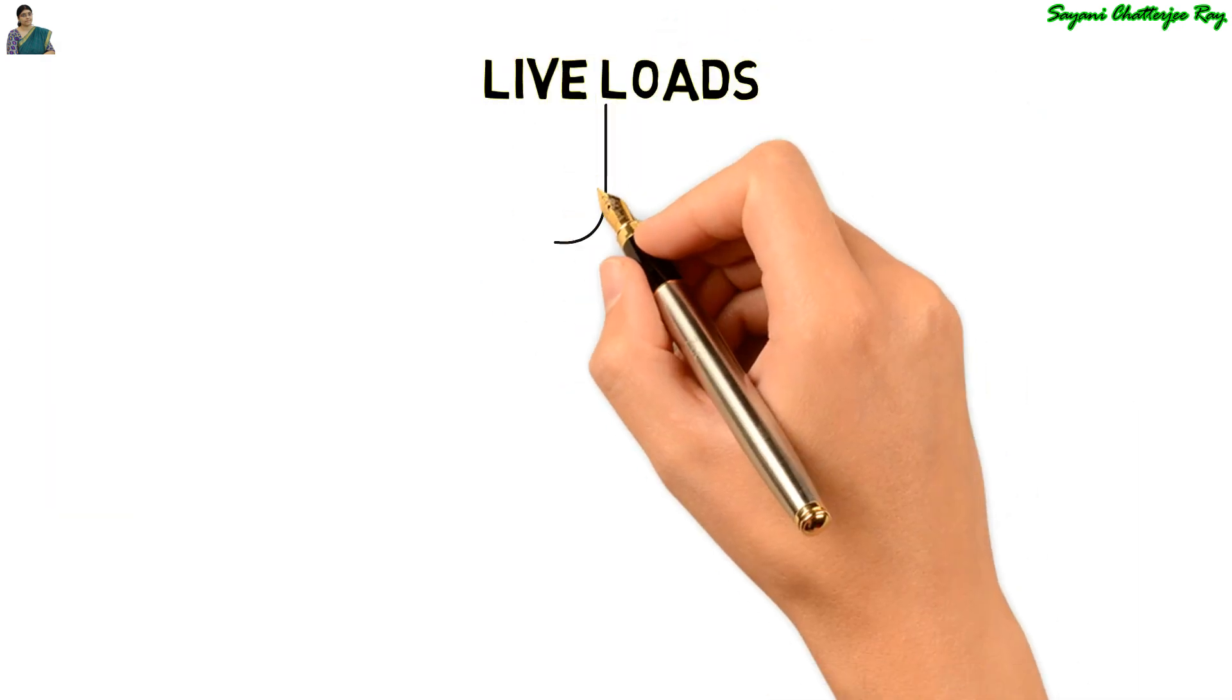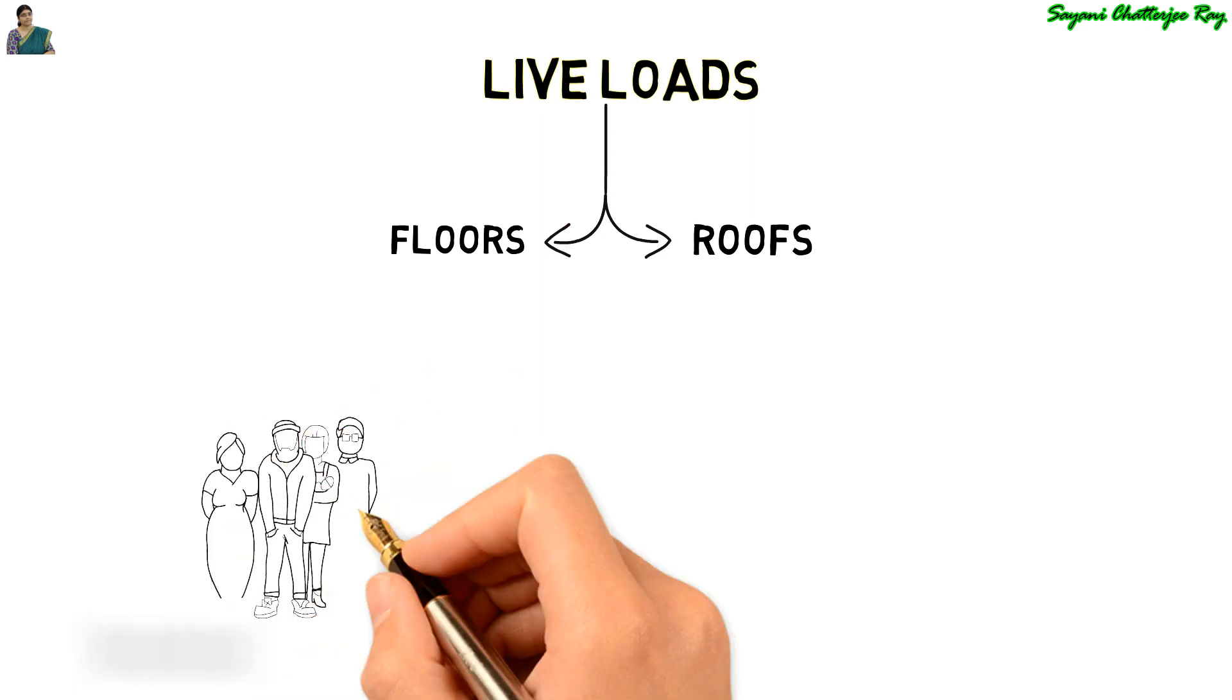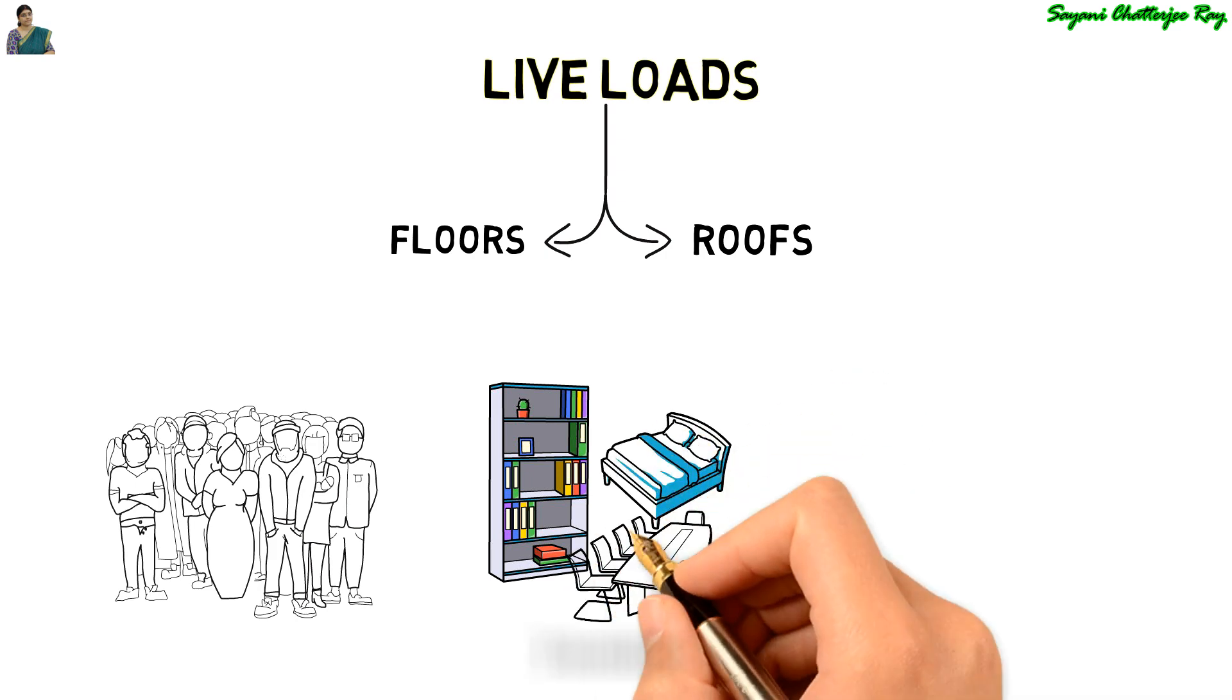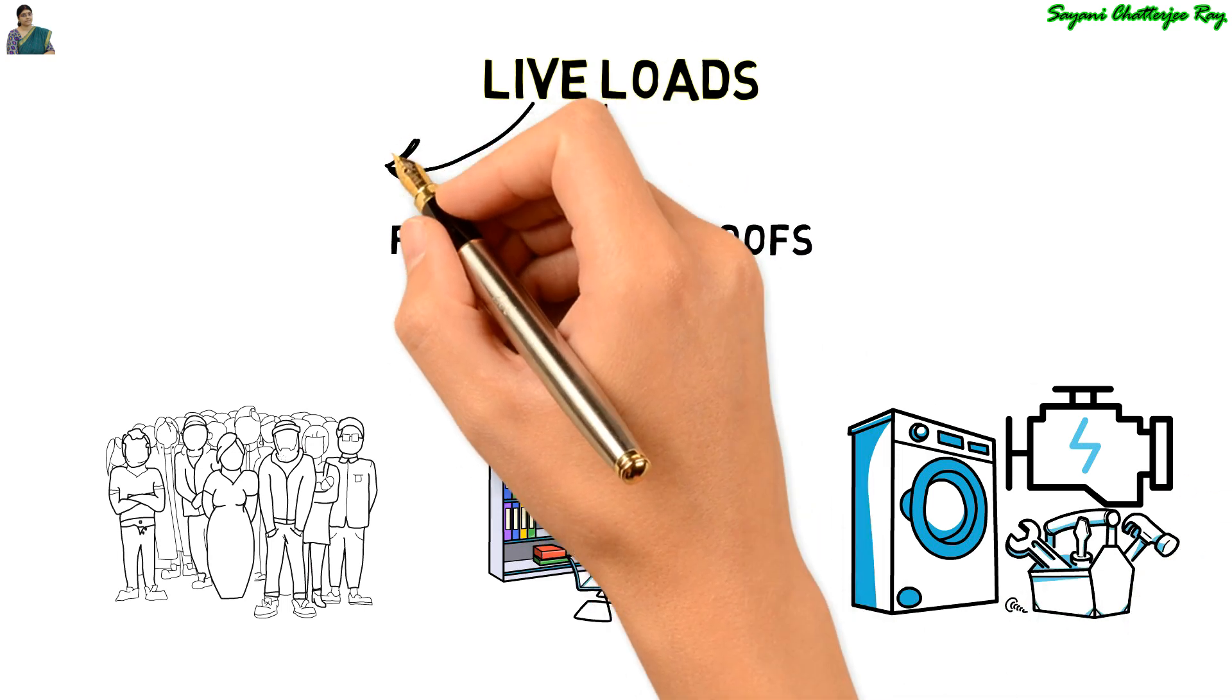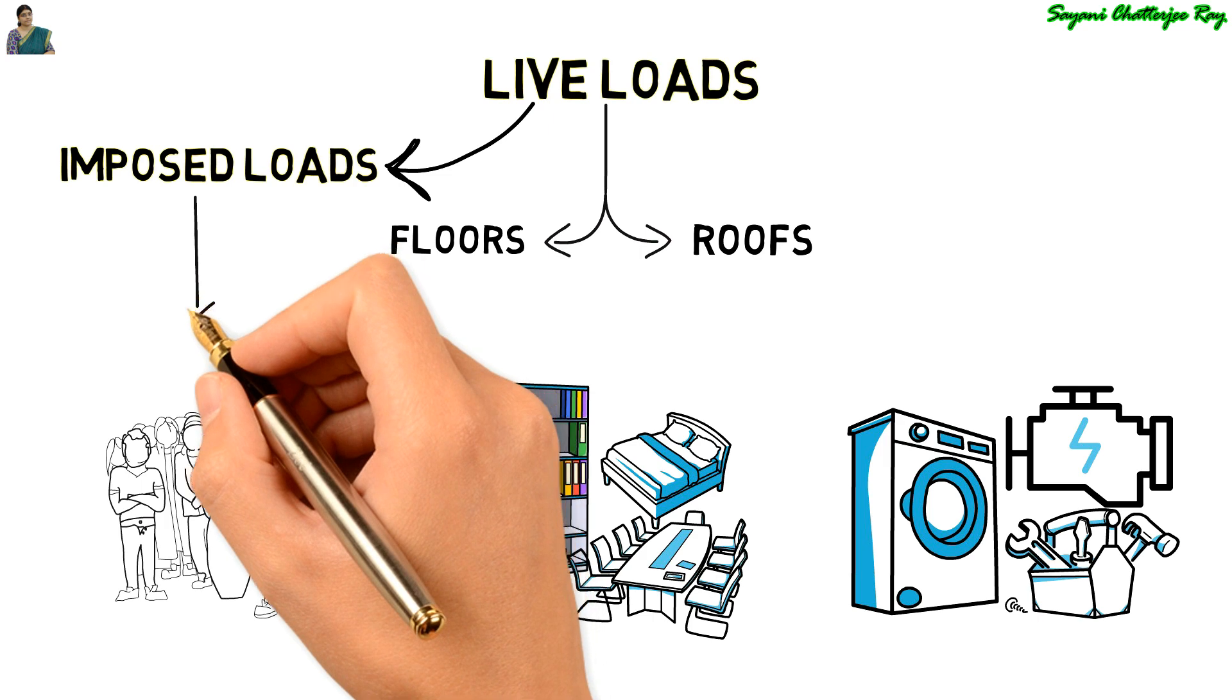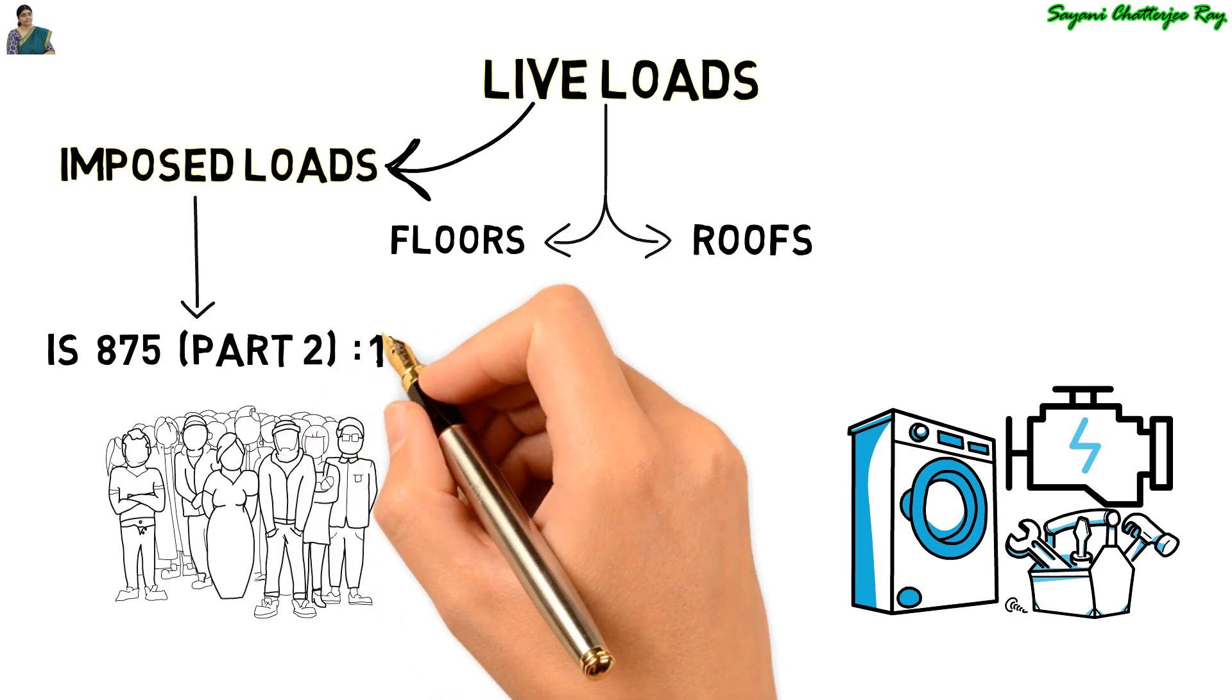Next type of load is live load or imposed load. Live load on the floors and the roofs consist of all the loads which are temporarily placed on the structure. The residents or inhabitants of the building, the furniture and machineries inside the building are the examples of live load. Live load is also known as imposed load, and the various types of imposed loads that are coming on any structure are given in IS 875 part 2 1987.